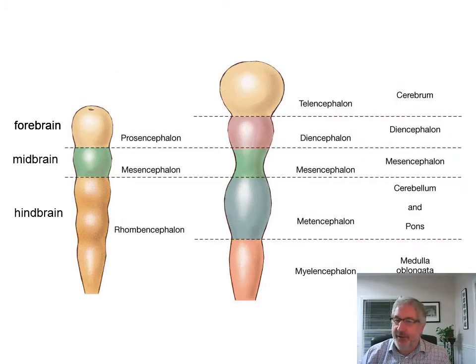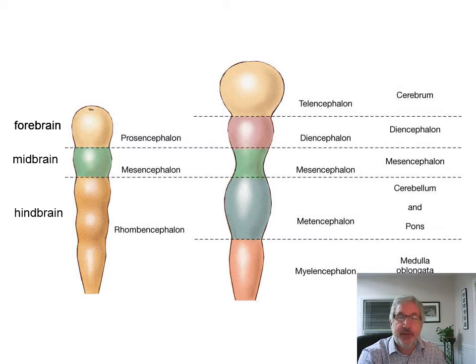This is the anterior end of the neural tube at three weeks. The prosencephalon is the forebrain, the mesencephalon becomes the midbrain, and the hindbrain is the rhombencephalon.